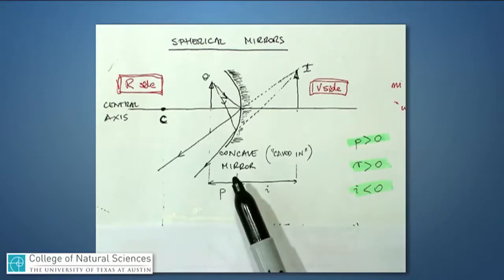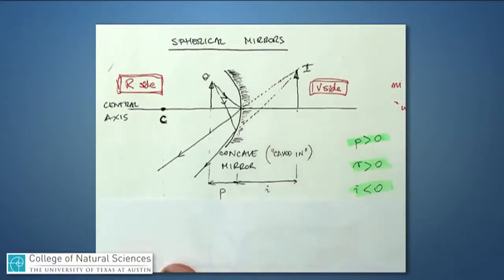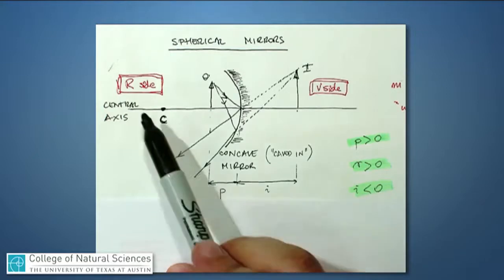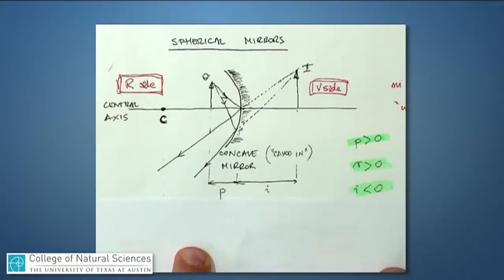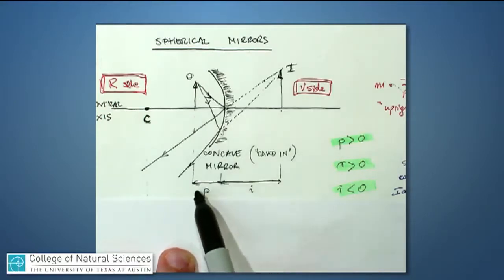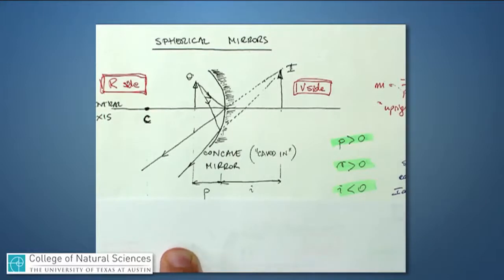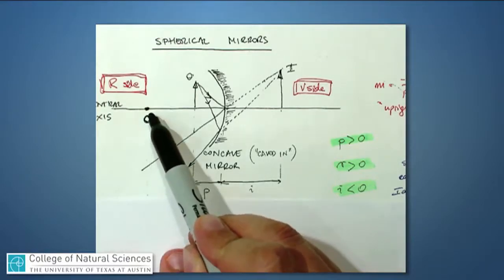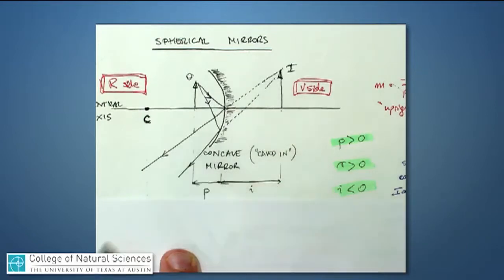Here's an example of a concave mirror — think of something caved in. The object is placed on the R side, which is the shiny side. P, the distance between the mirror and the object, is always positive because the object is on the R side. The radius of curvature R is also positive because the center of curvature is on the R side — any radius drawn from the center of curvature to the mirror points from the R side.